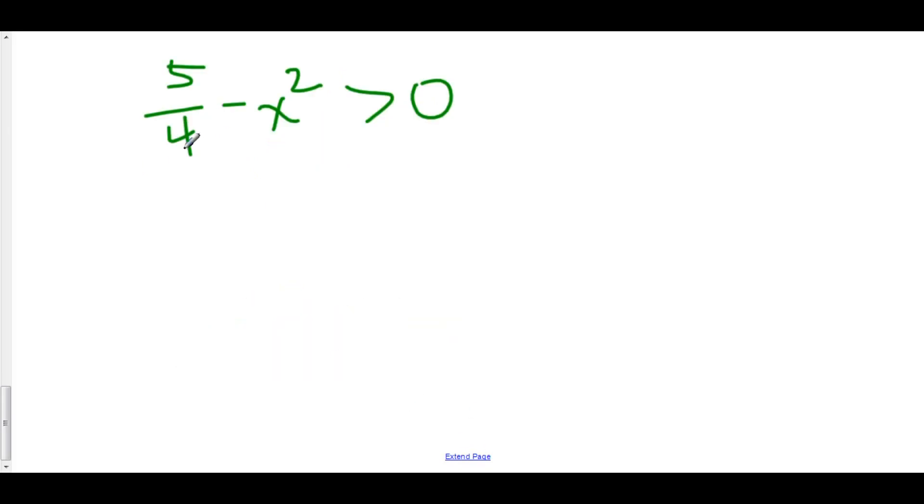At this point we can factor, but you might be saying, how can we factor? Simple. Difference of squares. I know, 5 over 4 is not a perfect square. However, if you take the square root of it, you get root 5 over 2. And we'll do that plus x times root 5 over 2 minus x. And this is all greater than 0.